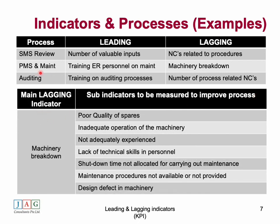Taking machinery breakdown as an example of a lagging indicator: if you wish to reduce machinery breakdowns, you need to measure the contributing factors. These could include quality of spares, inadequate operation of machinery, or not having adequately experienced personnel — these are some of the possible reasons. This is an indicative list; you need to prepare your own list identifying the reasons your machinery breakdowns occurred. This way you can analyze your lagging indicators and know where you stand.